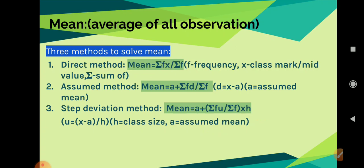In the assumed method, mean is equal to a plus sigma fd divided by sigma f. Here, a is the assumed mean. We consider the lowest value of x for a, so that our answer will be positive. D is nothing but x minus a — subtracting the mid value from the assumed mean. In the step deviation method, mean is equal to a plus (sigma fu divided by sigma f) into h, where u is found using (x minus a) divided by h, and h is the class size — the difference between the upper limit and lower limit.